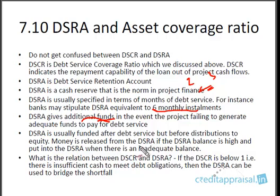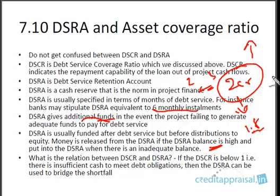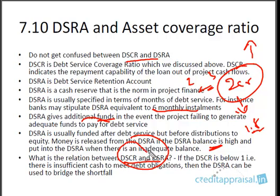The DSRA balance is released when the balance is higher than required — for example, if the company always has to maintain 2 quarters and the balance goes above that, the company might draw the excess. But if the balance falls below 2 quarters — say to 1.8 — the company has to replenish and bring it back to 2. DSCR and DSRA are two separate entities, but they are related: if DSCR falls below 1 and the company is unable to meet repayment obligations, DSRA will be drawn upon to bridge that shortfall.